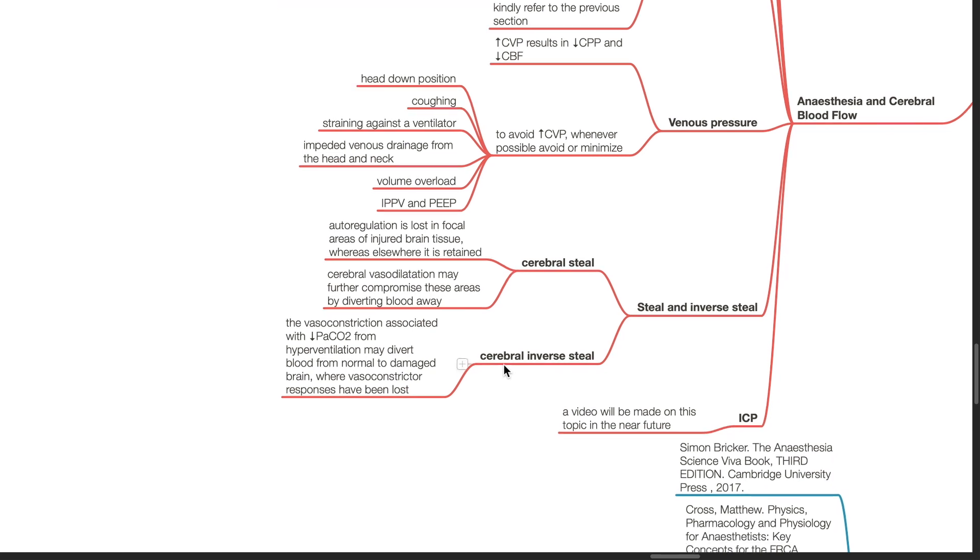Cerebral inverse steal. The vessel constriction associated with decrease in PaCO2 from hyperventilation may divert blood away from normal to damaged brain, where vessel constrictor responses have been lost.